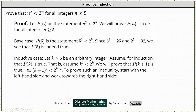And now for the inductive case, we let k be greater than or equal to 5 be an arbitrary integer, and we assume for induction that P of k is true, meaning we assume k squared is less than 2 to the power of k. We need to prove that P of the quantity k plus 1 is true, meaning we need to prove that the square of k plus 1 is less than 2 to the power of k plus 1.